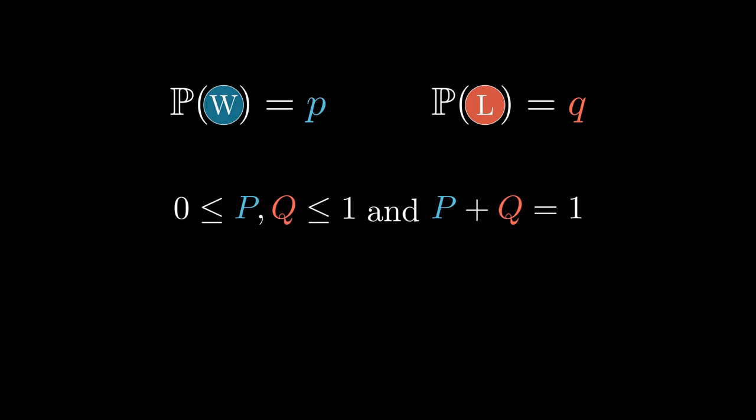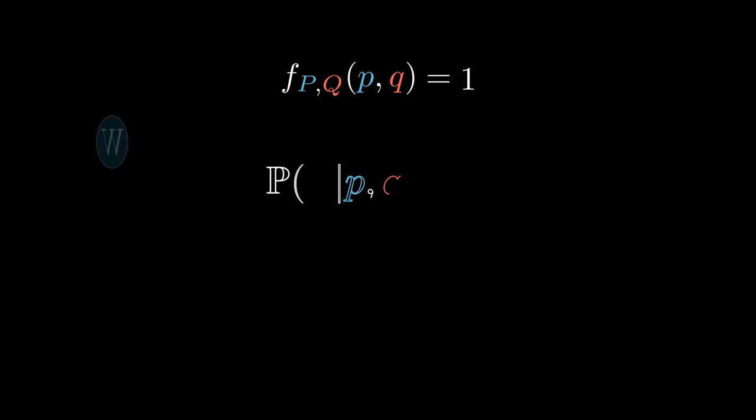So, we are trying to find the probability density functions of these two variables. To begin with, we assume they are uniformly distributed which makes the density function 1. Let's say A won the first game. Time to update the density function. If we knew the value of P, it's obvious that the probability of player A winning the game is just P. To answer the converse or the reverse, we use Bayes' theorem for continuous distributions.